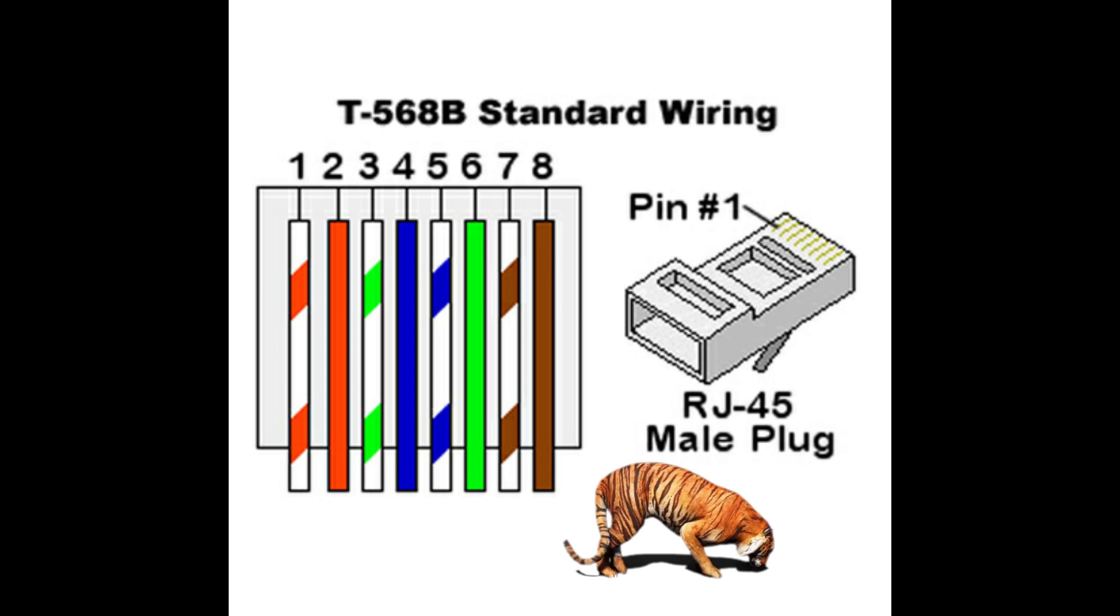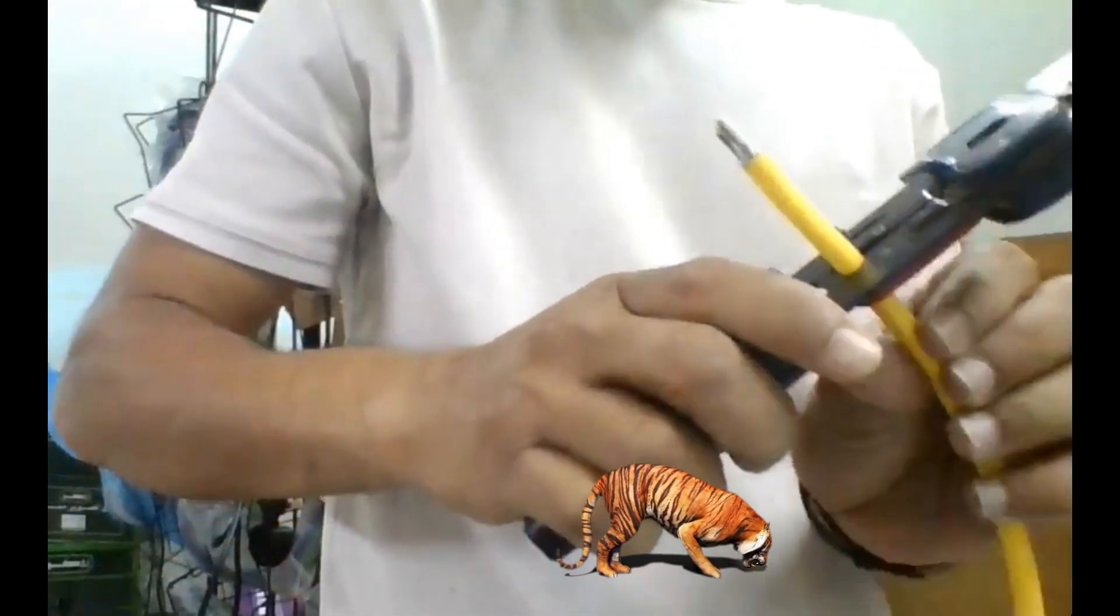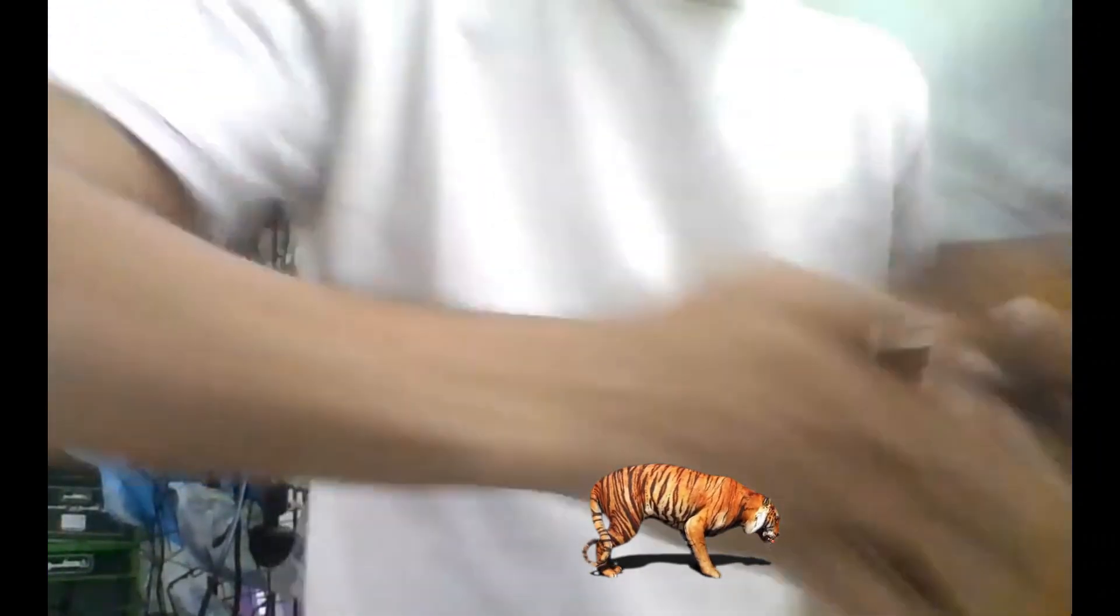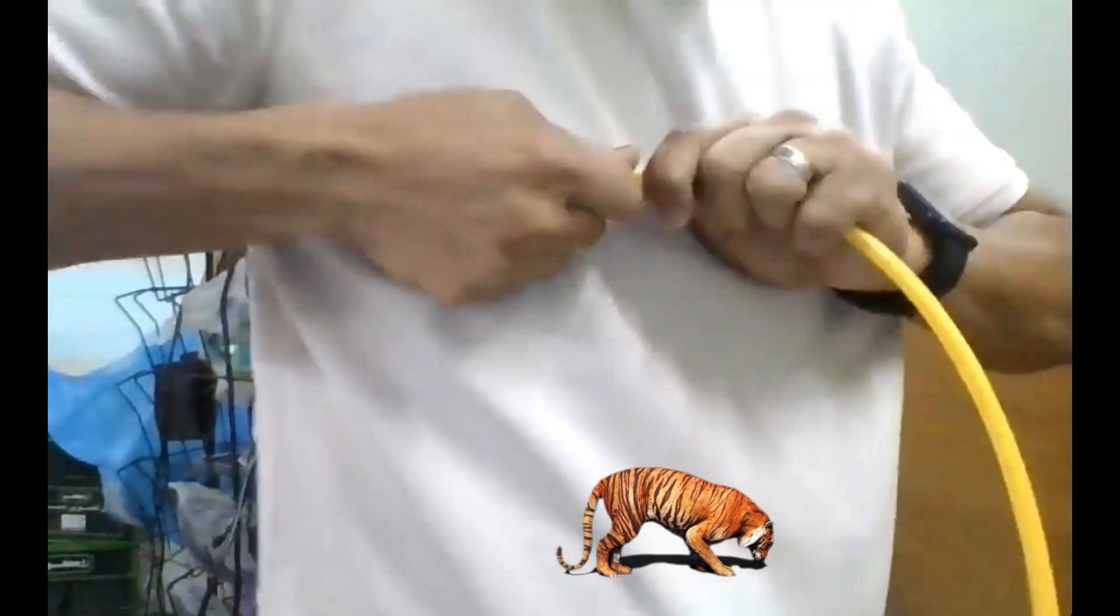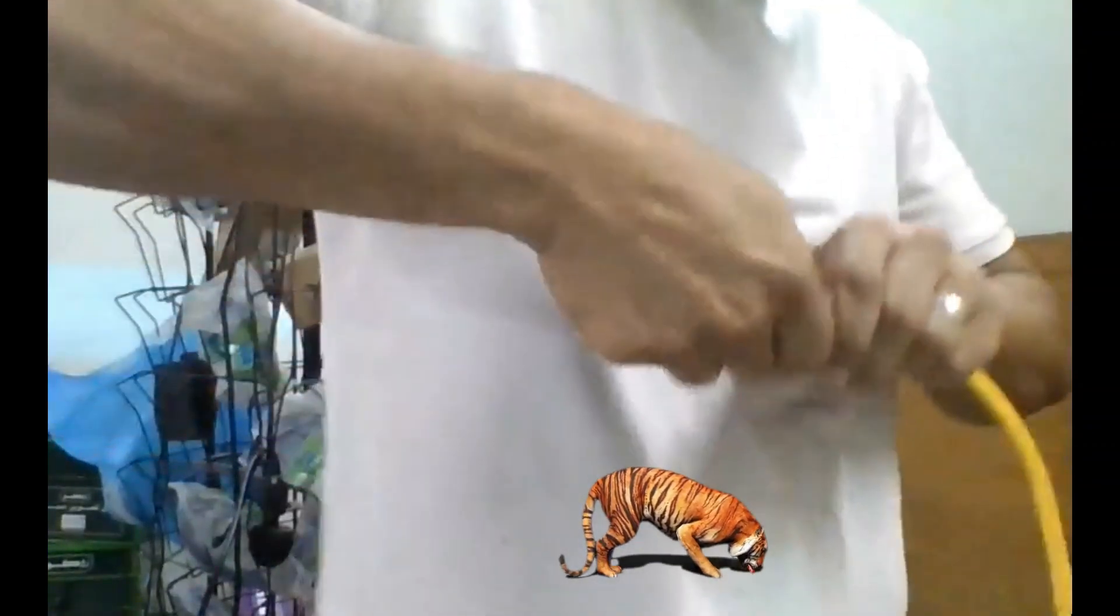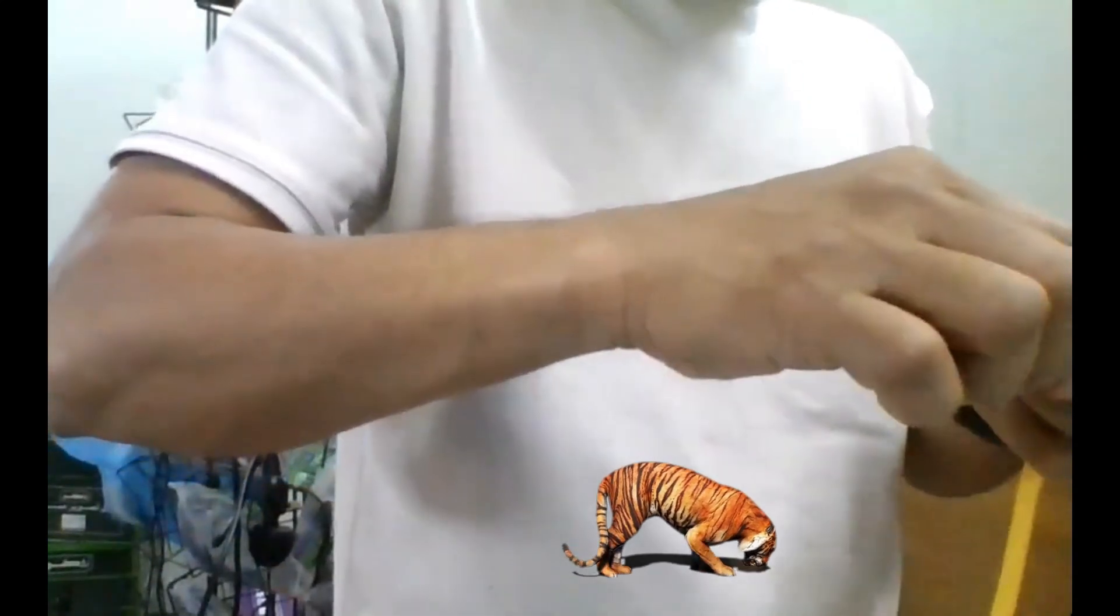Okay, let's start. Here we have the crimping tool, and then RJ45, and then a small piece connector here. I will show you later.